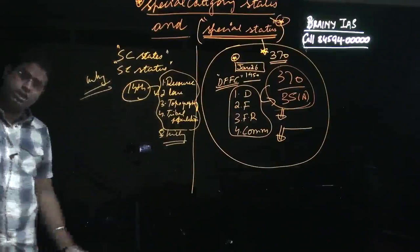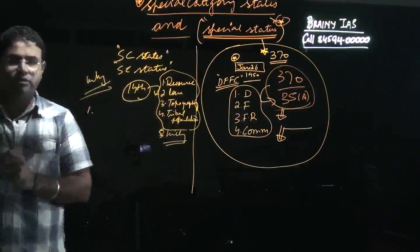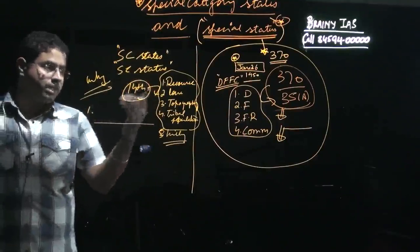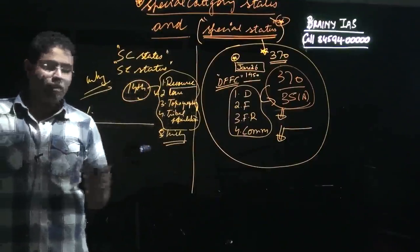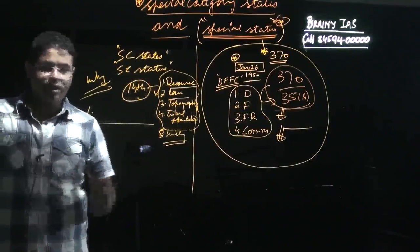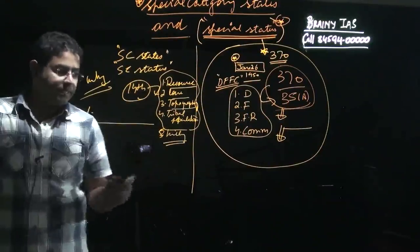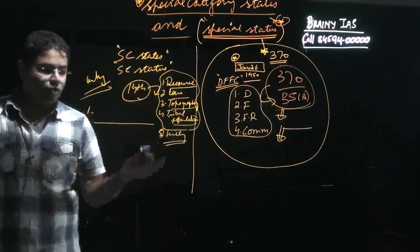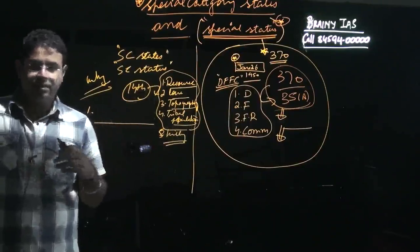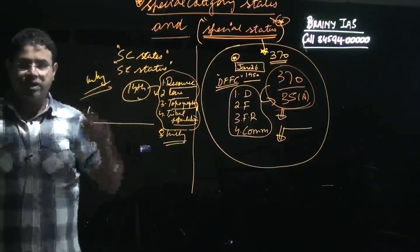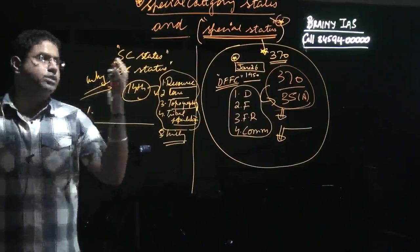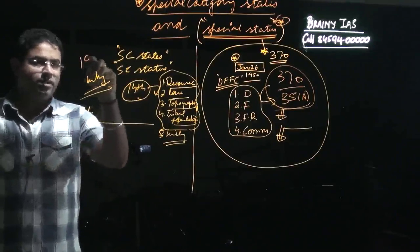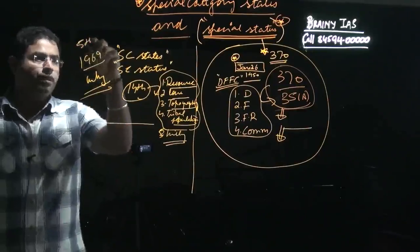The reason this status was accorded is important. These states were low in terms of resources, had low population, difficult topography, large tribal populations, and poor economic conditions. In order to bring these states into the mainstream, the special provision was added in 1969 on the recommendation of the 5th Finance Commission.